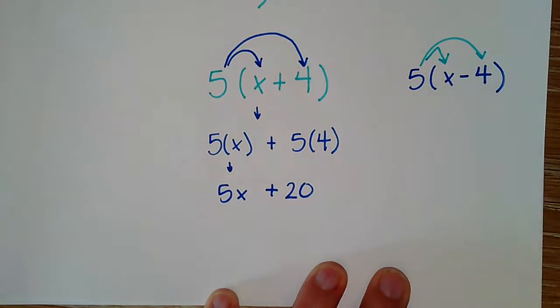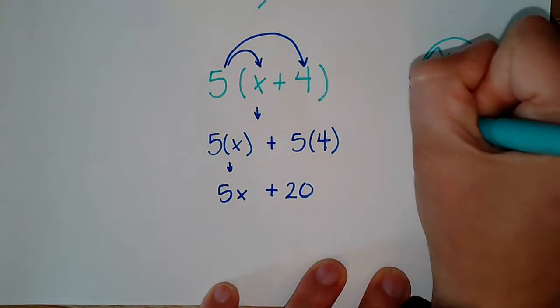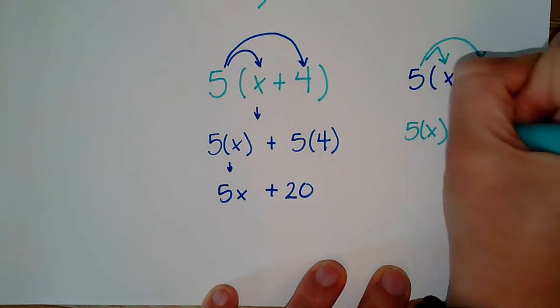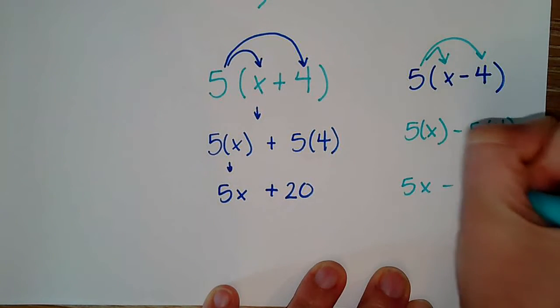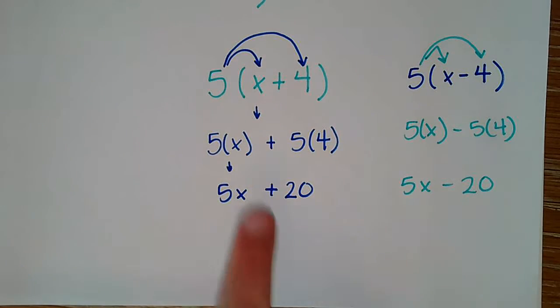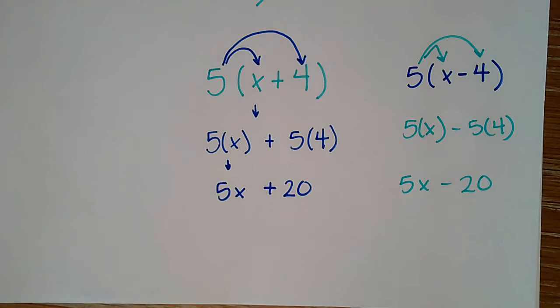As long as we have addition or subtraction, again, same thing. And then I've got 5x minus 20. These are my simplified versions.